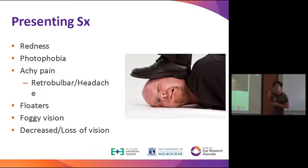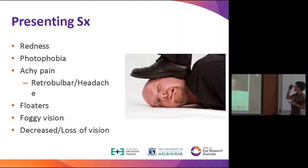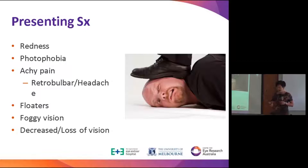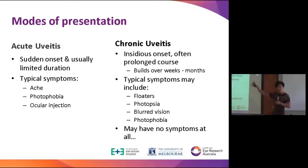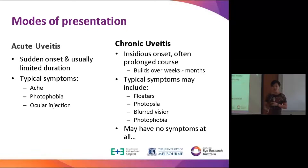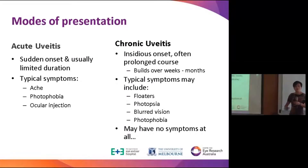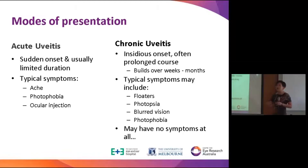How does uveitis present? A great gamut of symptoms — from photophobia and redness with some ache, down to loss of vision. It can present acutely, usually when patients have pain and photophobia. However, it can also present insidiously with slowly building vision loss — these patients may not have much pain but will present with floaters, photopsia, and eventually foggy vision and loss of vision.